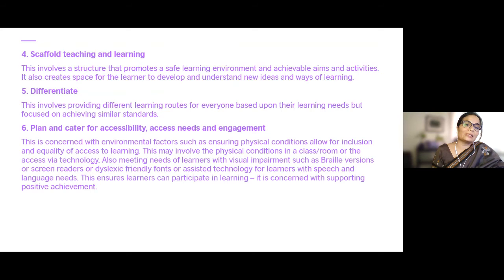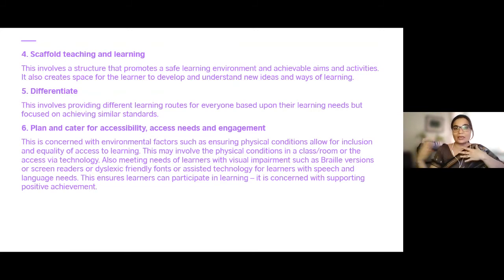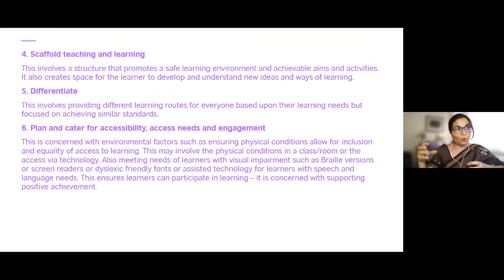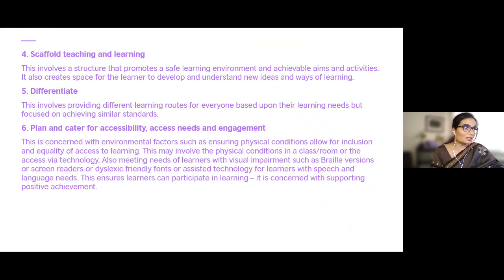Number six is plan and cater for accessibility, access needs, and engagement. This is concerned with environmental factors such as ensuring physical conditions allow for inclusion and equality of access to learning. For example, if you're doing a running dictation activity, a child in a wheelchair can't do it in the same way as other learners, so you need to think about how to make the activity possible for all. This may also involve meeting needs of learners with visual impairments such as Braille versions or screen readers, dyslexic-friendly fonts, or assisted technology for learners with speech and language needs.